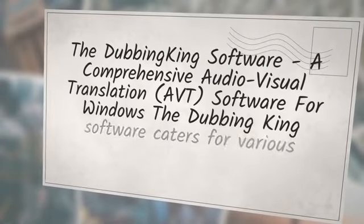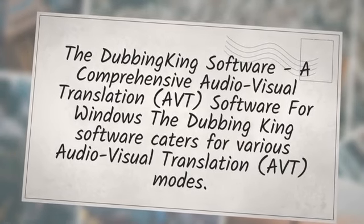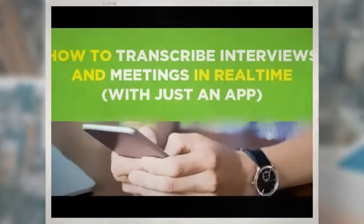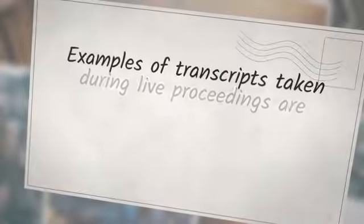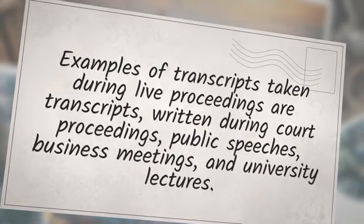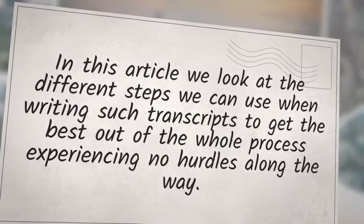The Dubbing King software is a comprehensive audio-visual translation (AVT) software for Windows. It caters for various AVT modes and is used for subtitling, translation, and dubbing processes. Transcription is creating text files from already recorded audio or video files and live proceedings. This article looks at the different steps you can use when writing such transcripts to get the best out of the whole process, experiencing no hurdles along the way.